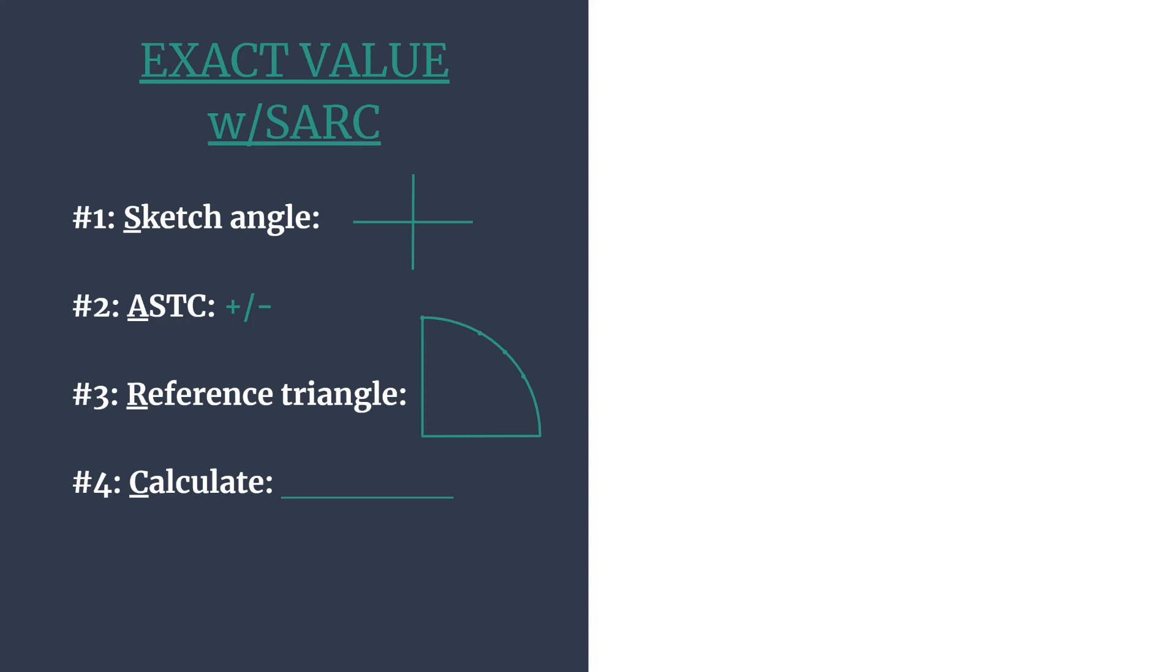The R is for reference triangle so we'll find the reference angle and then the special right triangle and coordinates that go with it and the C is for calculating the trig ratio. So we're going to do that for the tangent of 420 degrees.